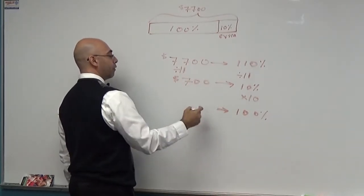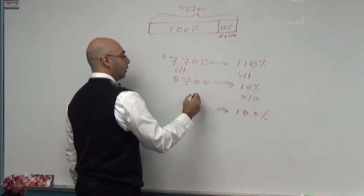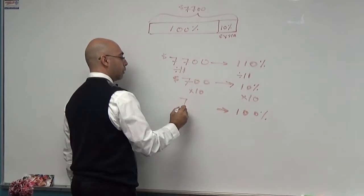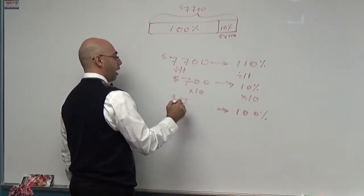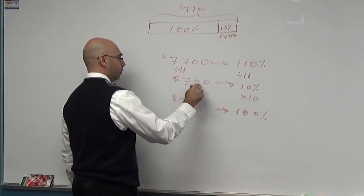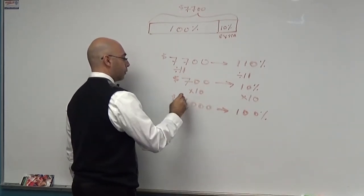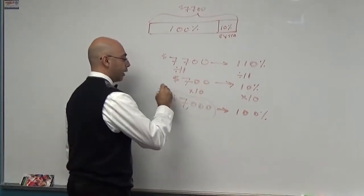He had an extra $700 because that's what 10% is. Then you multiply by 10. That's 7 with how many zeros after it? Count. Three.